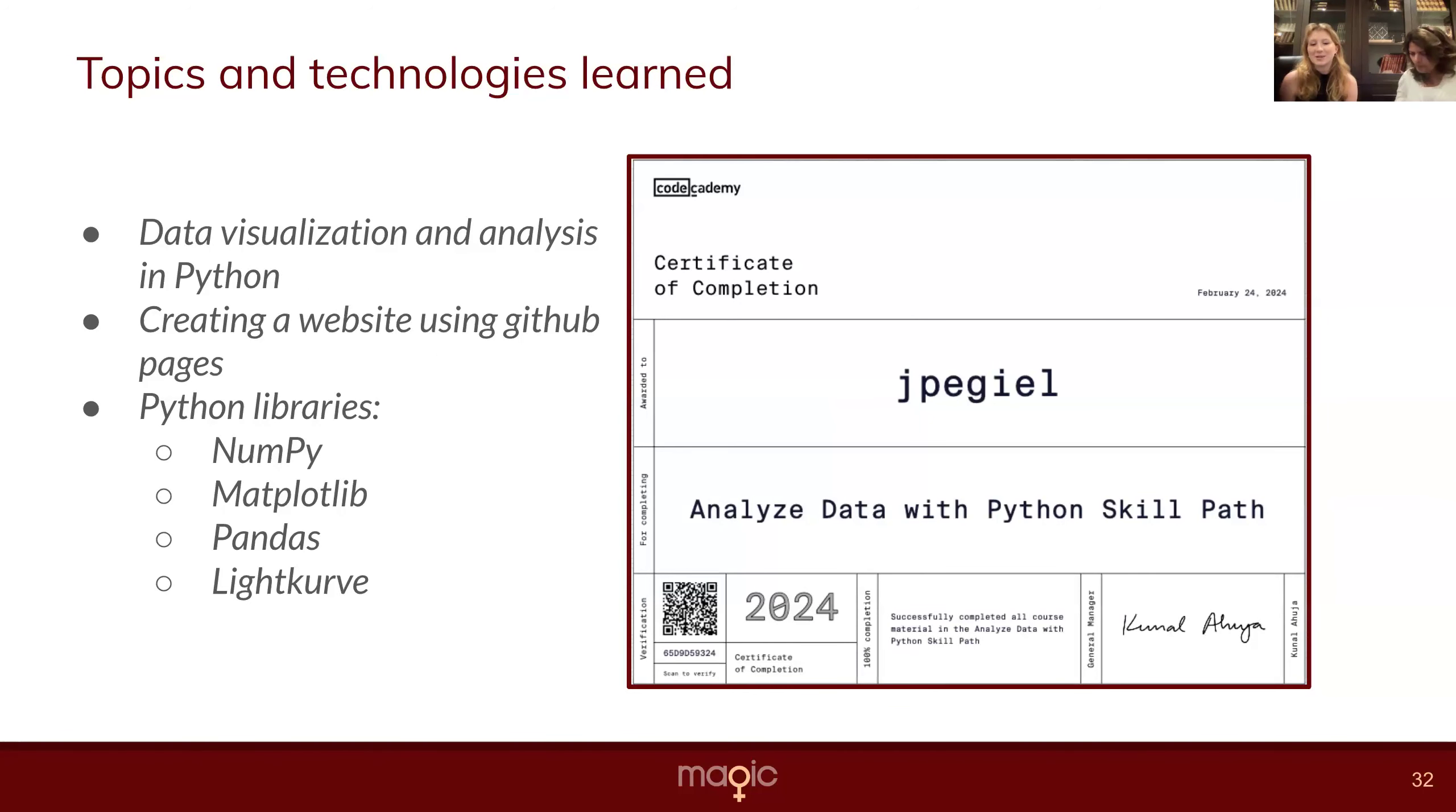So my project started with just getting to know the basics of Python, starting with a course on Code Academy, which included libraries like Numpy, Matplotlib, Pandas for data analysis and visualization. And then I moved on to learning LightCurve, which the project was all about. And then as kind of an extra, we ended up creating another whole project, which was a website.